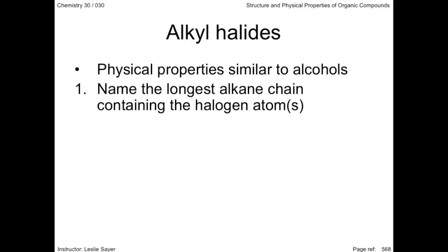As before, cyclic hydrocarbons have carbon number 1 bonded to the functional group. And for multiple halogens, the other carbons are numbered so that the lowest numbers appear in the name.